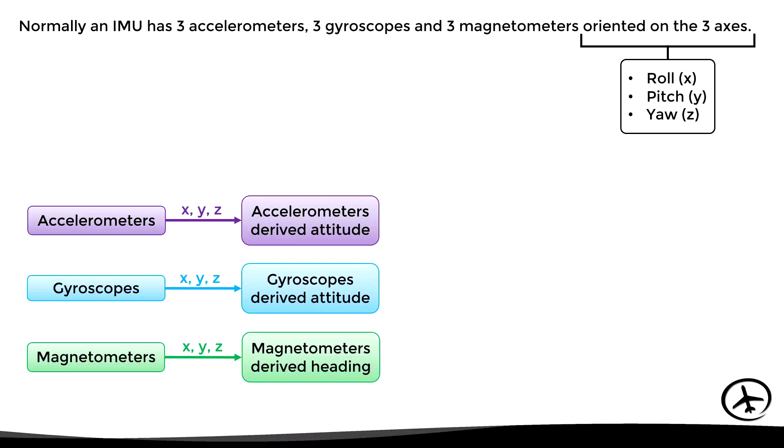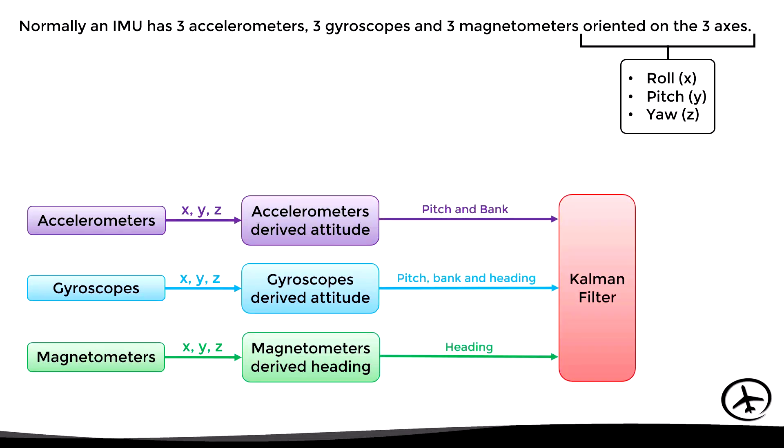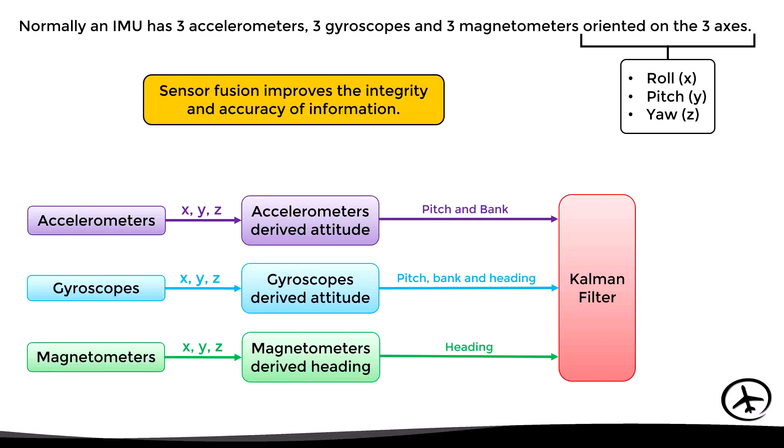Taking into account the capabilities of each type of sensor, the following data is obtained: the accelerometers are capable of measuring the attitude of the aircraft in terms of pitch and bank; the gyros are capable of measuring pitch, bank, and heading; and the magnetometers are capable of measuring only the magnetic heading. All this information derived from the sensors is sent to a Kalman filter, which integrates and complements this information through sensor fusion, improving the integrity and accuracy of the data to calculate the estimated pitch, bank, and heading values.